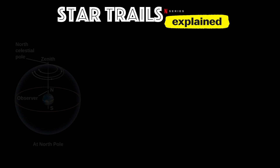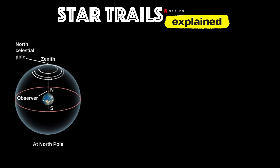Let's talk about star trails in detail. Why do they appear the way they do? Generally, we start this conversation by revisiting the idea that if an observer is standing on the north pole of Earth, then the north celestial pole, where Polaris can be found in the sky, is directly overhead.